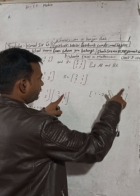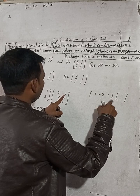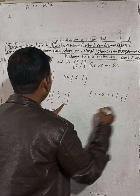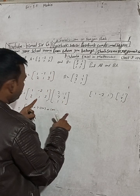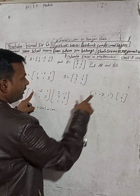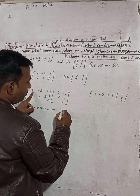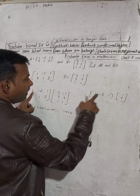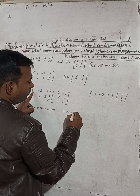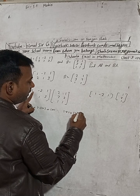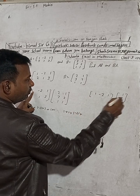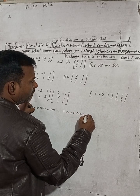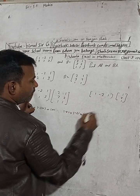Now for the second column, we take the first row of A again and the second column of B: 1, 2, 1. So we compute: 1×1 + (-2)×2 + 1×1.